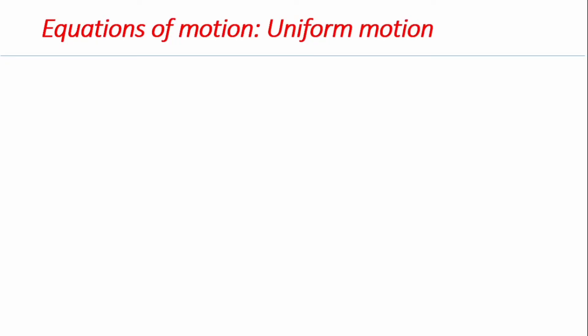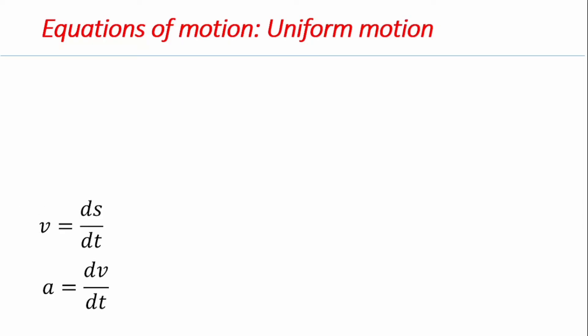We must first note the basic equations for uniform motion. Uniform motion is different from uniformly accelerated motion in that for uniform motion, acceleration is zero and velocity is constant. There are two fundamental equations for rectilinear motion: the first defines instantaneous velocity as the derivative of distance with time, v = ds/dt, and the second defines instantaneous acceleration as the derivative of velocity with time, a = dv/dt.